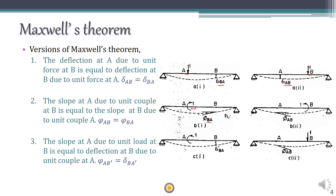So the second variation states that the rotation at A due to a unit moment applied at B equals the rotation at B due to a unit moment applied at A. The third variation is that the deflection at B due to a unit rotation applied at A is the same as the rotation at A due to a unit force applied at B.